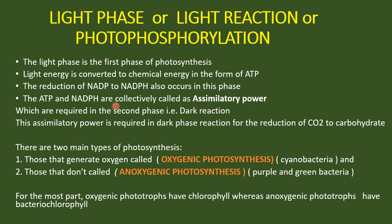The two main photosynthesis types that occur in bacteria are oxygenic photosynthesis and anoxygenic photosynthesis. Oxygenic photosynthesis generates oxygen — an example is cyanobacteria. Those which do not produce oxygen are called anoxygenic photosynthesis, examples being purple and green bacteria which do not evolve oxygen during the photosynthesis process.